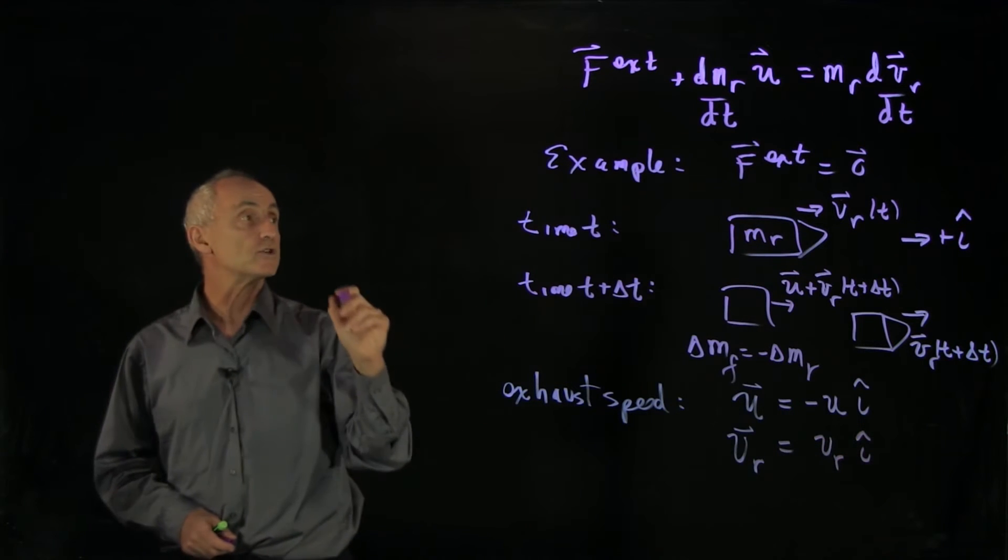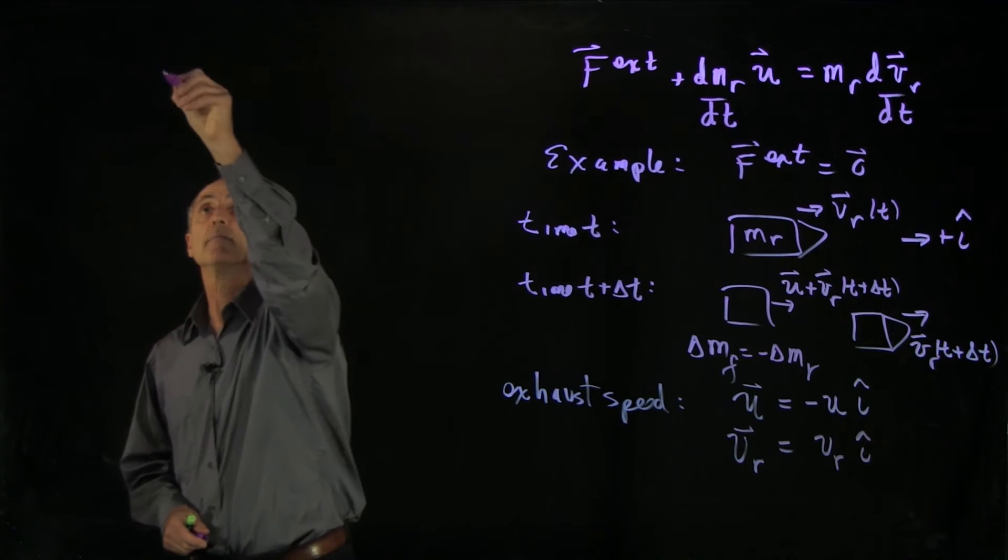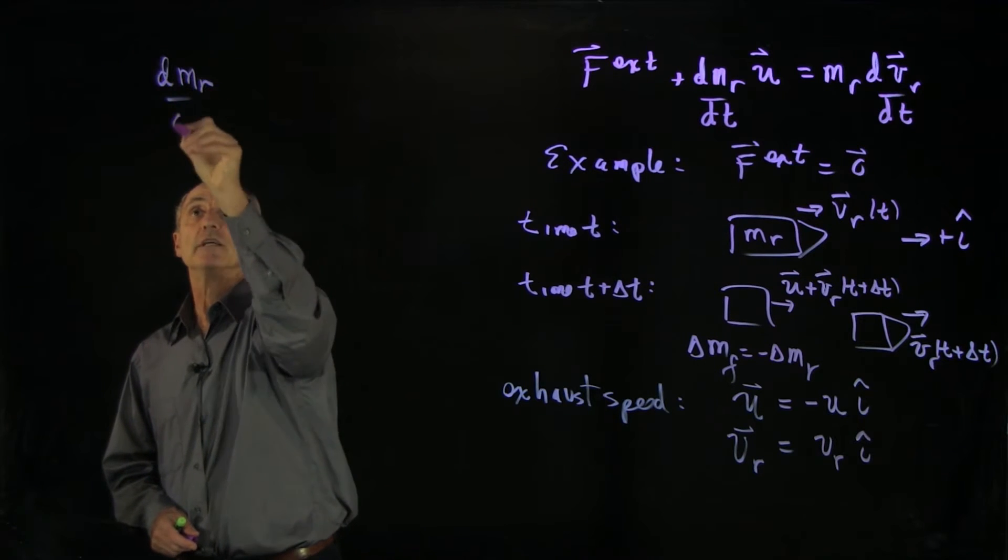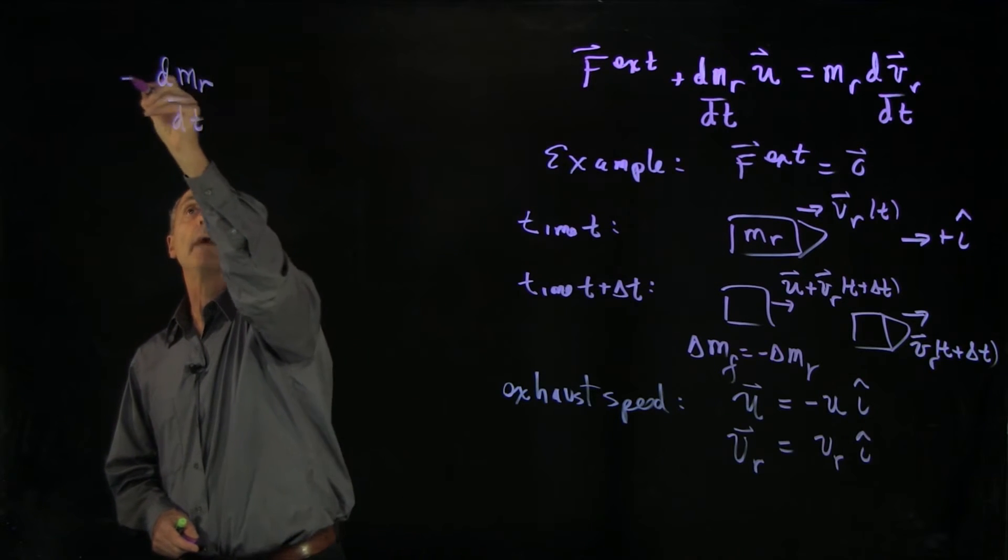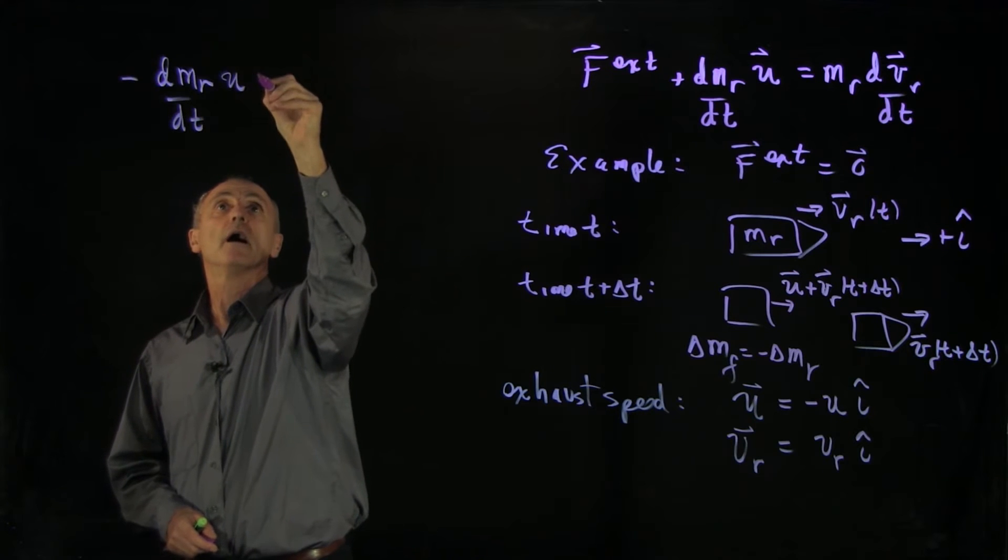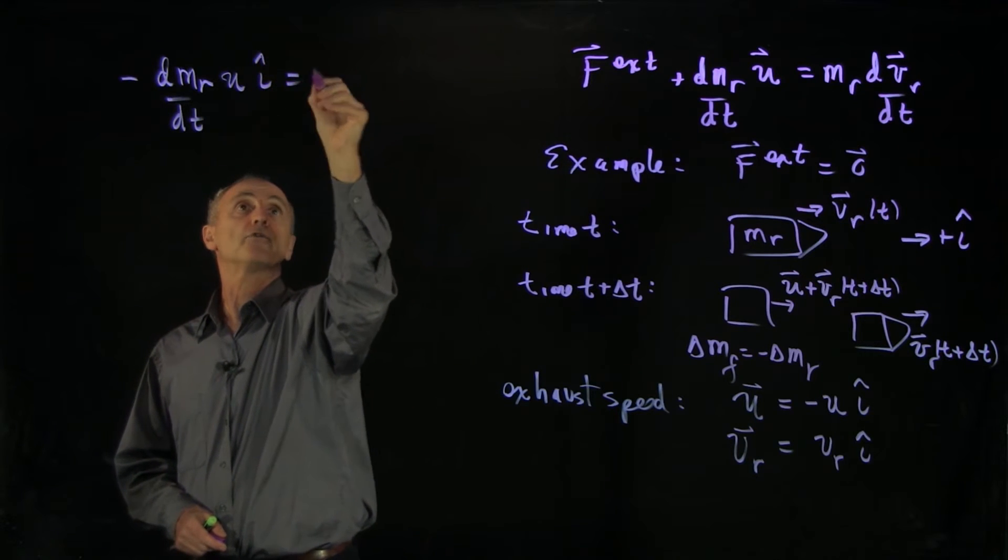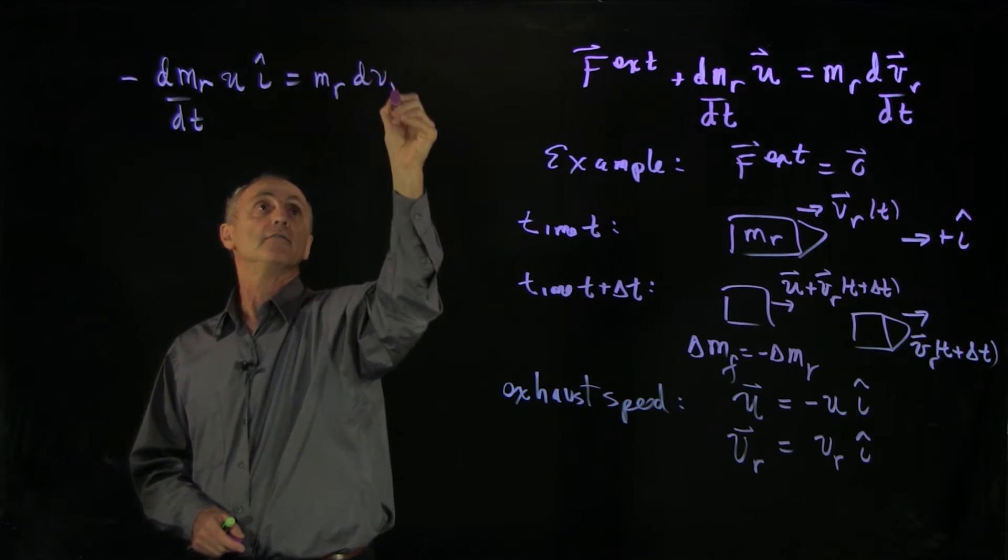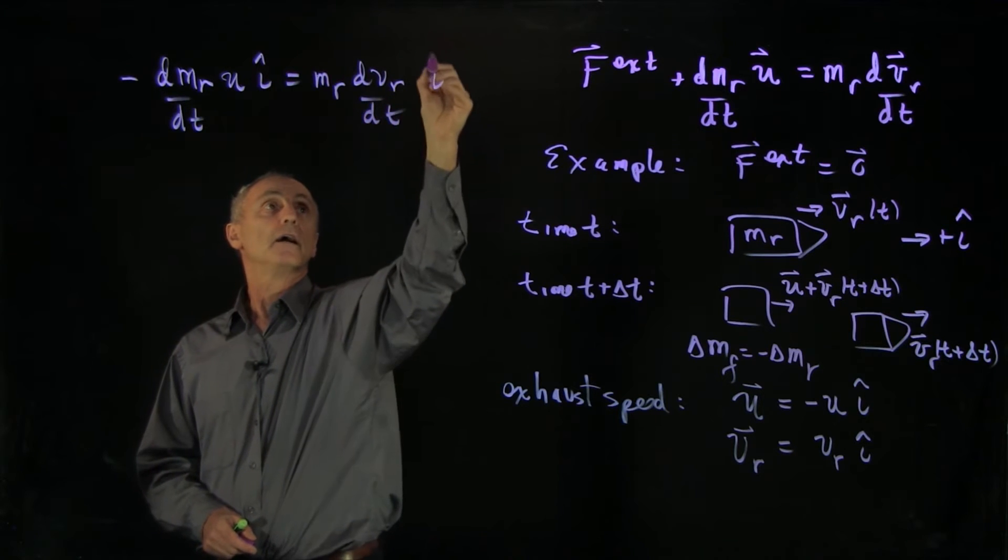So our rocket equation in this special case becomes dm_r/dt times minus u i-hat equals m_r dv_r/dt i-hat.